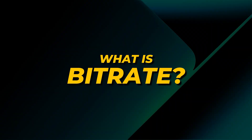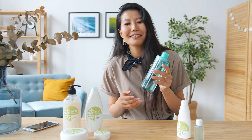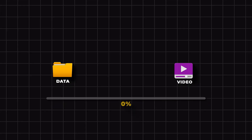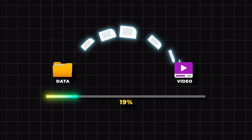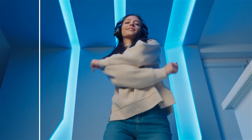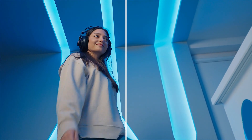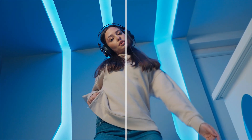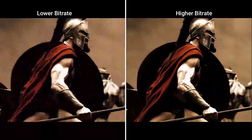First, let's understand what BitRate is. BitRate is like the richness of your video's data. When you have a higher BitRate, it means more information is being packed into each second. This can lead to sharper images, smoother motion, and fewer annoying compression artifacts. So, the higher the BitRate, the better your viewing experience.